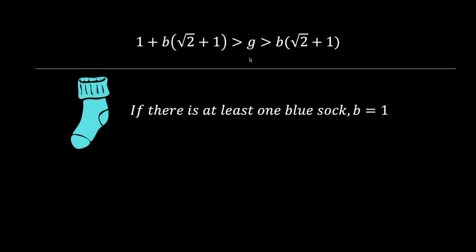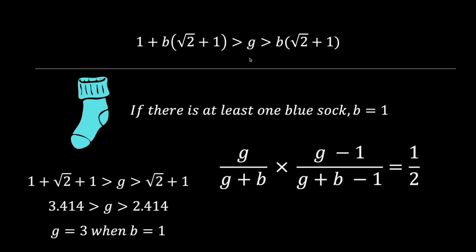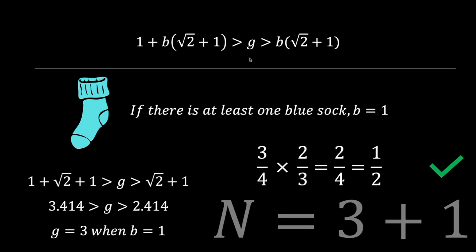Since the problem requires at least one blue sock, which is the smallest possible value for the number of blue socks, let b equal to 1. Plugging in the values, we see that g, an integer value, must be 3 when b is equal to 1. As a sanity check, let's see if the probabilities hold, which they do. Hence, n is equal to 3 plus 1, 4.